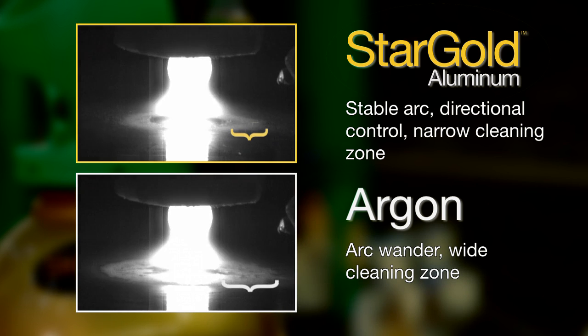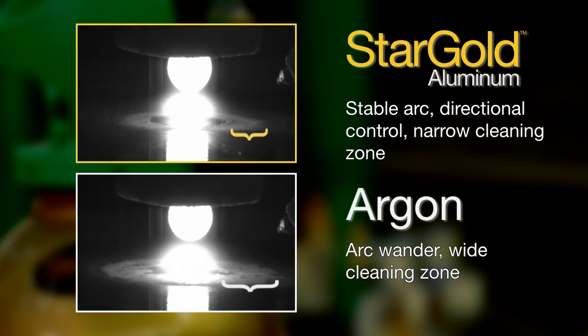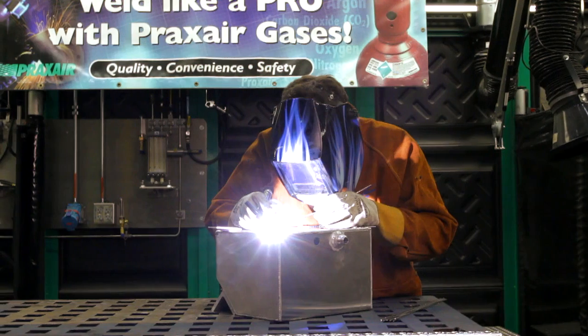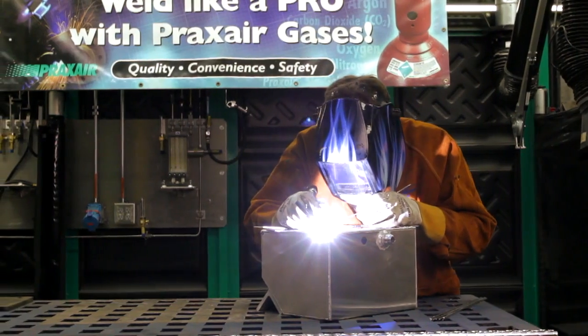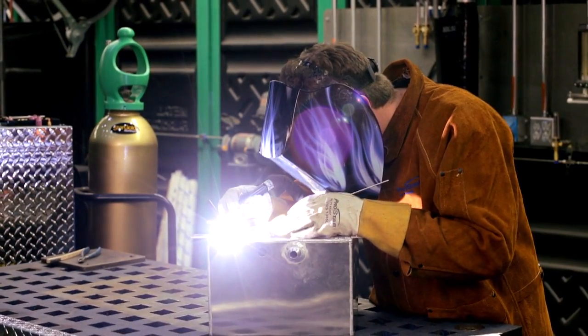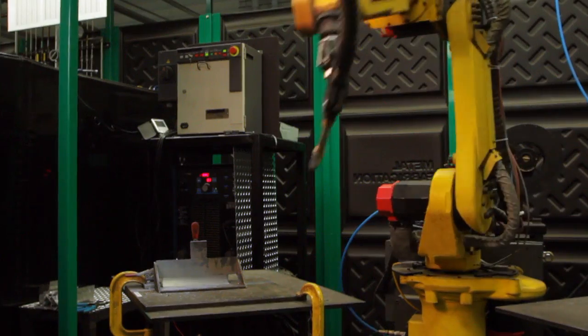With Stargold Aluminum, the arc has more stability, providing improved directional control, and the width of the cleaning zone is decreased to just beyond the edge of the weld puddle. As a result of its performance characteristics, Stargold Aluminum can help welders achieve higher quality TIG welds.